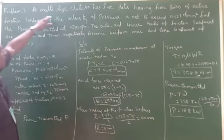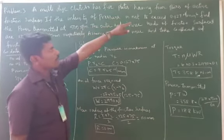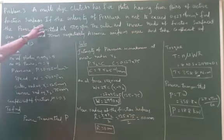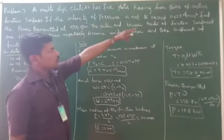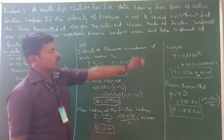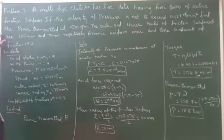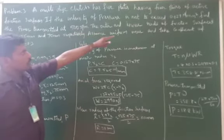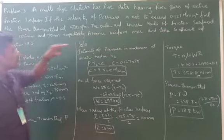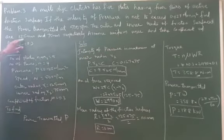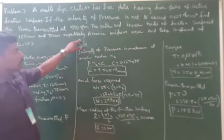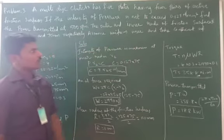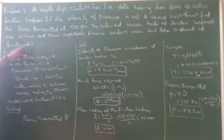The problem: a multi-disc clutch has 5 plates having 4 pairs of active friction surfaces. The intensity of pressure is not to exceed 0.127 N/mm². The power transmitted at 500 rpm is to be found. The outer and inner radius of friction surfaces are 125 mm and 75 mm respectively.